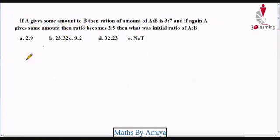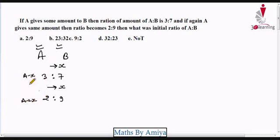If A gives some amount to B, say X, some amount to B, it is 3 is to 7. If A again gives the same amount to B, again A transferred X, let's say 2 is to 9. What was the initial ratio? This is nothing but A minus X, this is A minus 2X. We have a gap of 2. Summation is 10, summation is 11. So I multiply 11 here, I multiply 10 here.